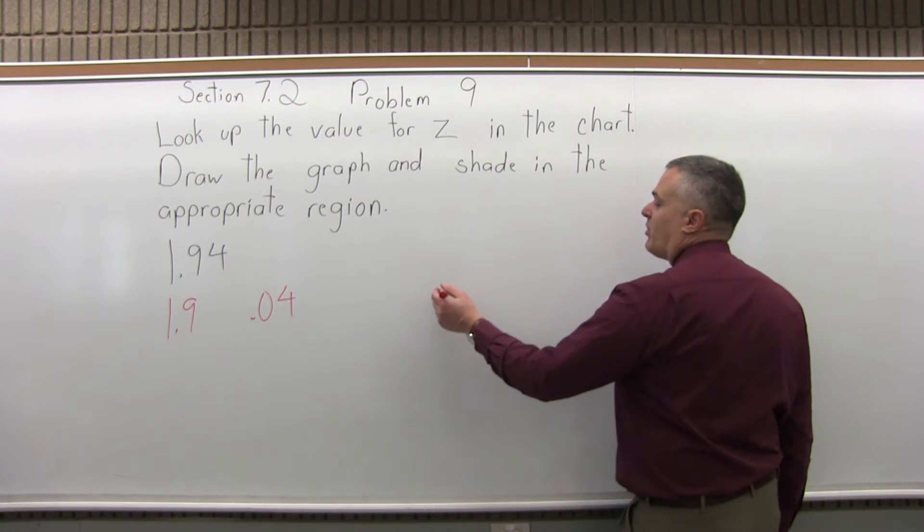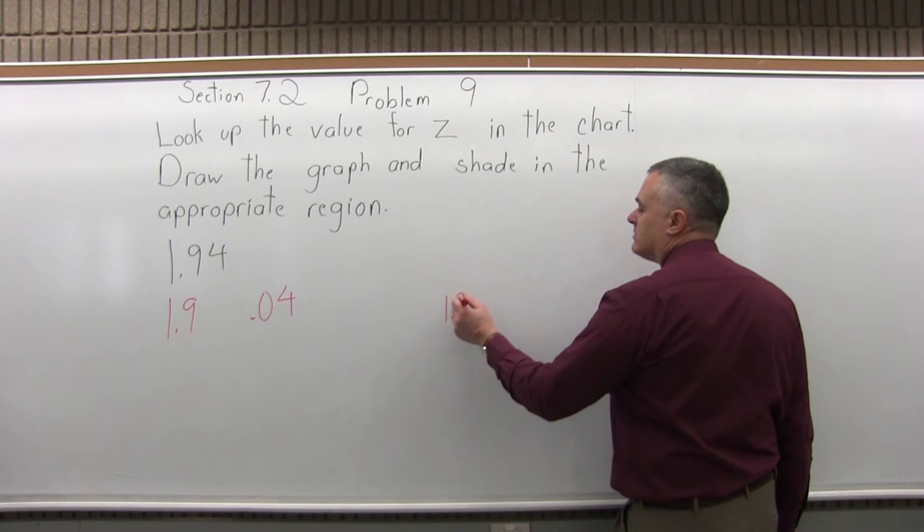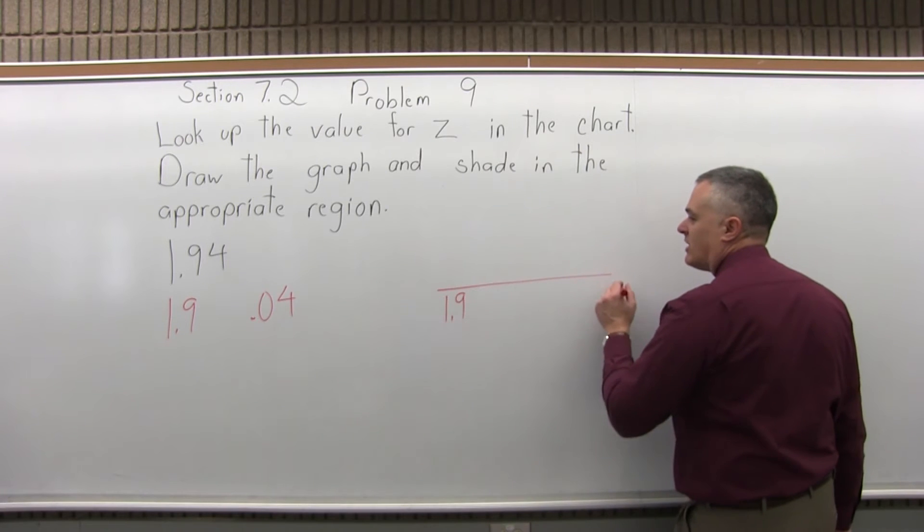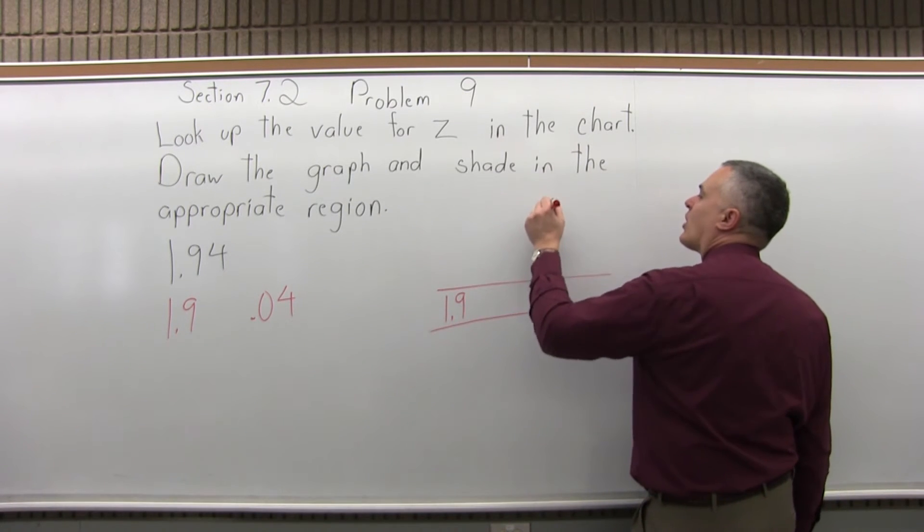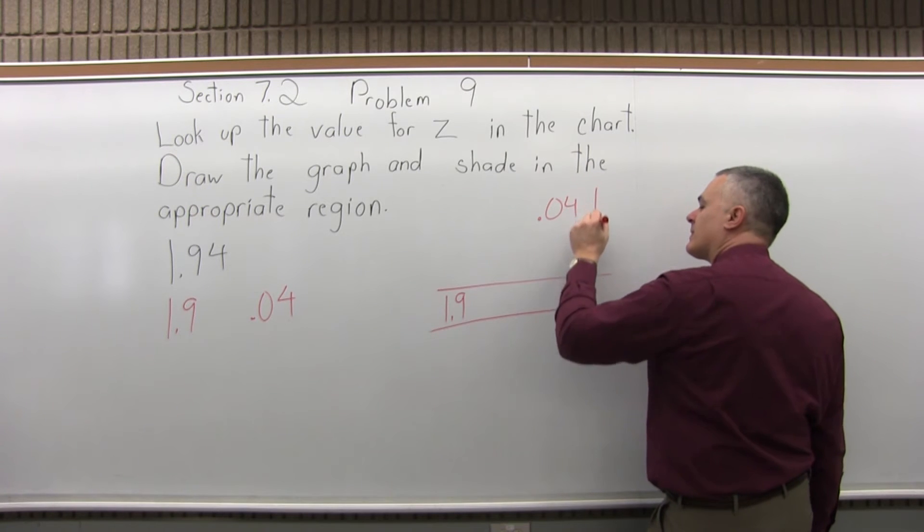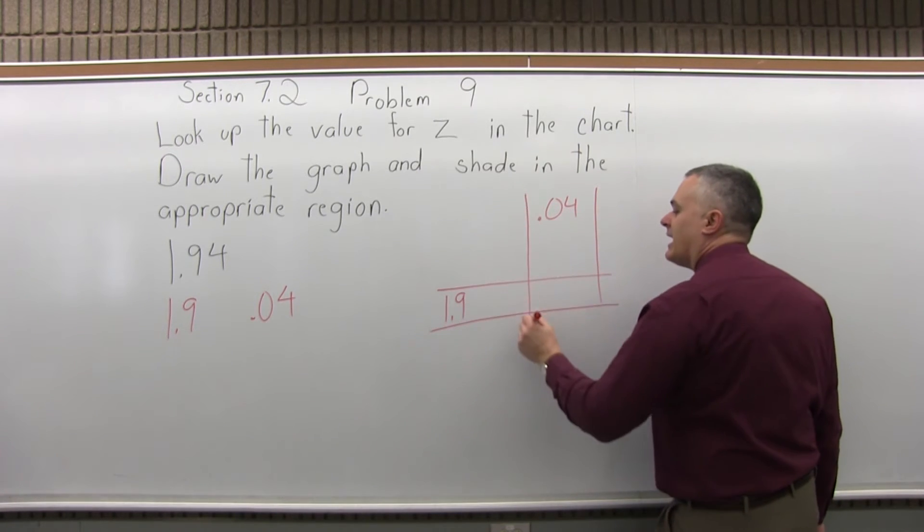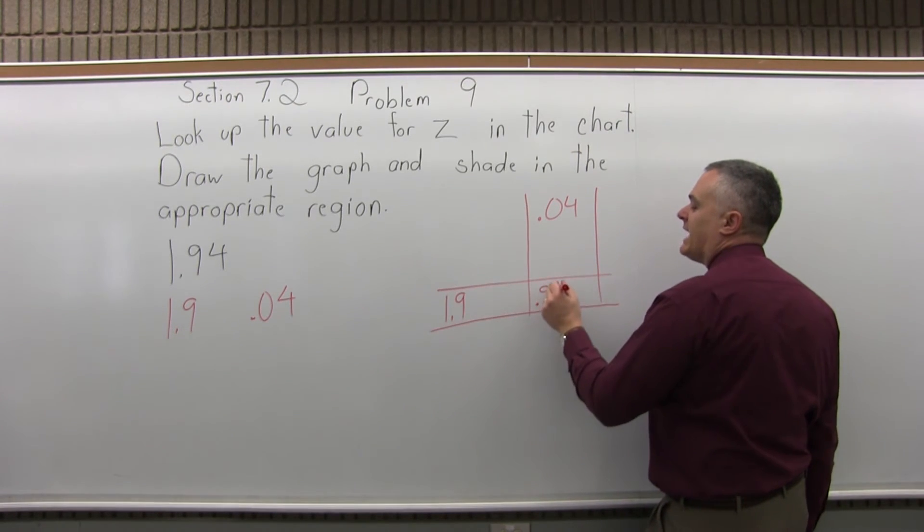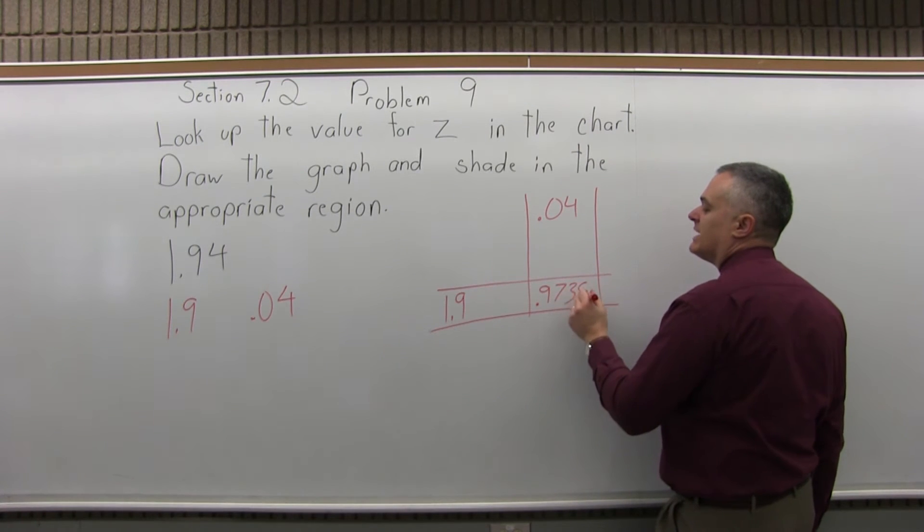We'll go to the 1.9 row, the positive page of the chart, and the 0.4 column. And they intersect at .9738.